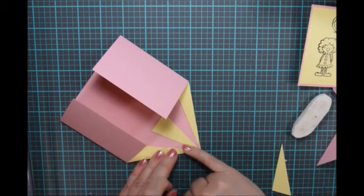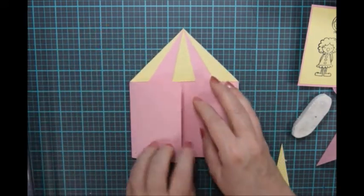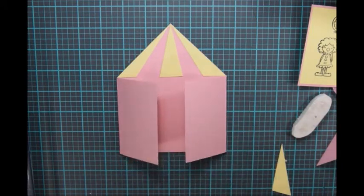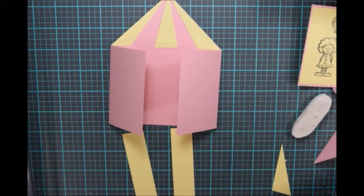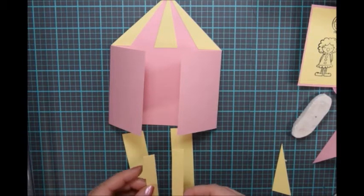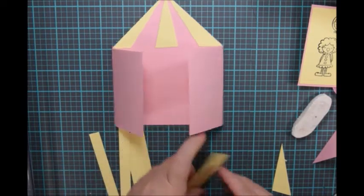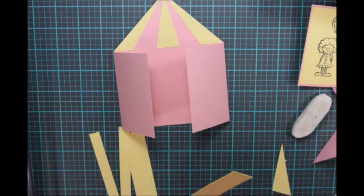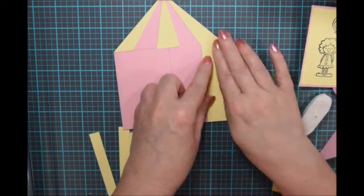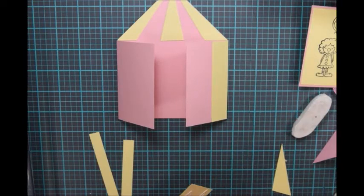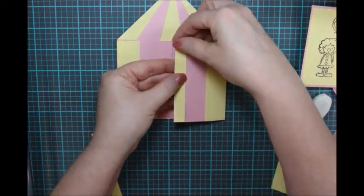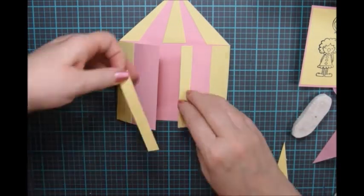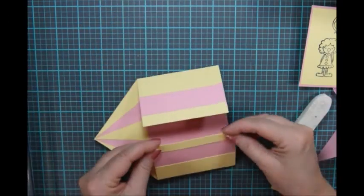All right, the next step is to put on the stripes on the bottom part of the tent. And I've cut two 1 inch by 3 3/4 inch pieces and two 1/2 inch by 3 3/4 inches. And I'm just going to go ahead and glue those on.